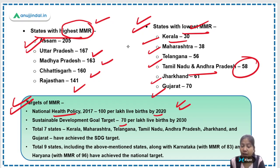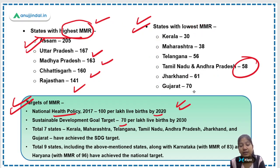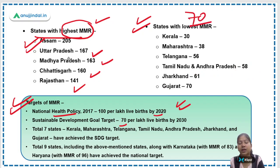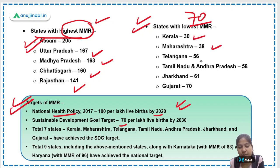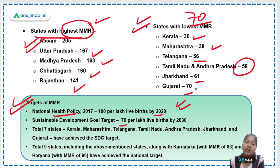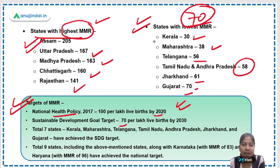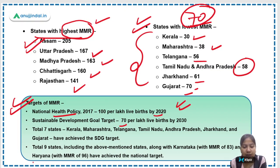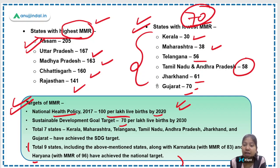These are the two key targets. Seven states — Kerala at 38, Maharashtra at 38, Telangana at 56, Tamil Nadu and Andhra Pradesh at 58, Jharkhand at 61, and Gujarat at 70 — fulfill the SDG target. These seven states along with Karnataka and Haryana, totaling nine states, fulfill the National Health Policy target of 100 per lakh live births.